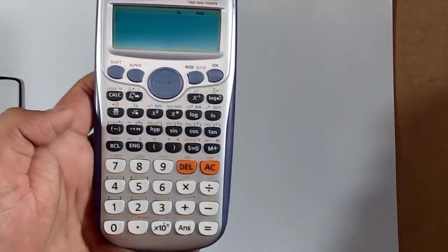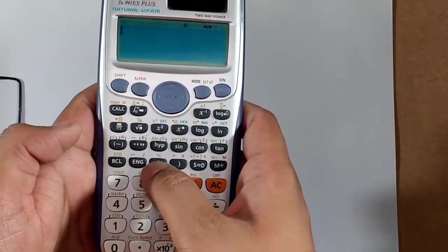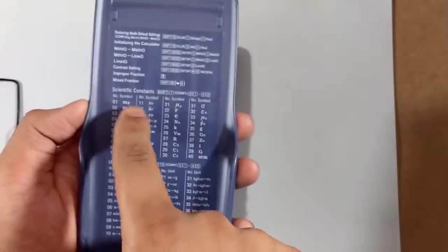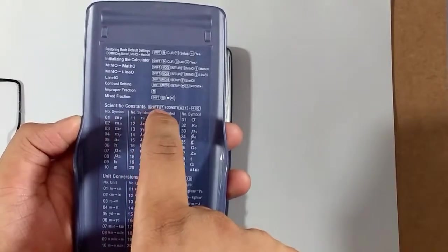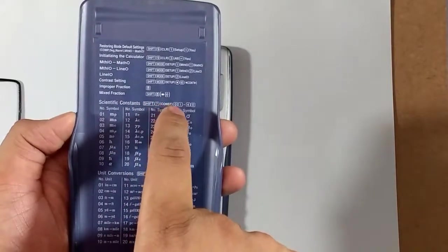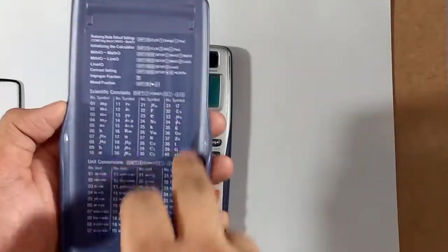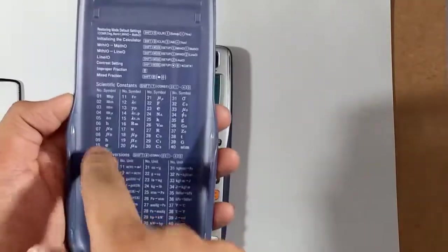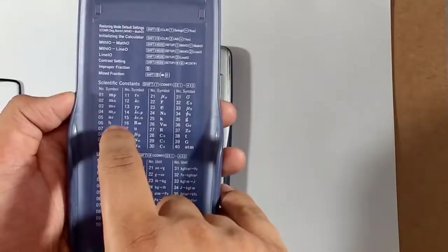I'm gonna discuss all other buttons in the next tutorial, but let us first look at the constants and conversions. These are the constants controlled by shift 7 constant, and then the value from 01 to 40. These are very helpful because they are the stored values. I'm gonna give you the guide for these. These are the conversions. For example, we want to know the value of h.